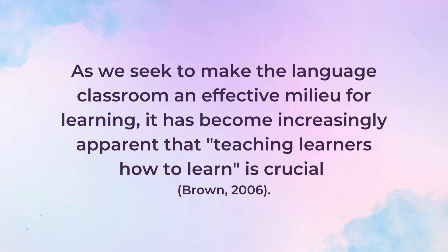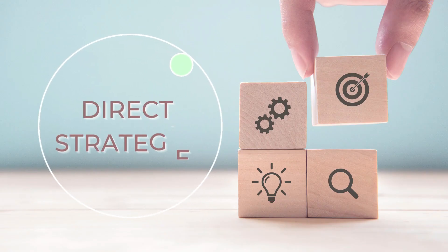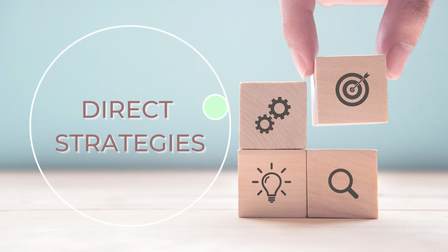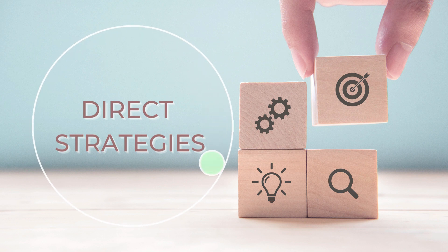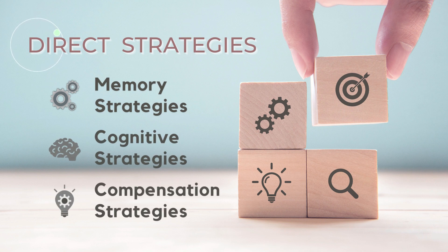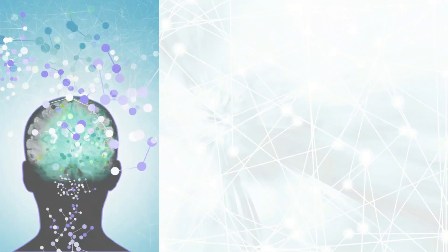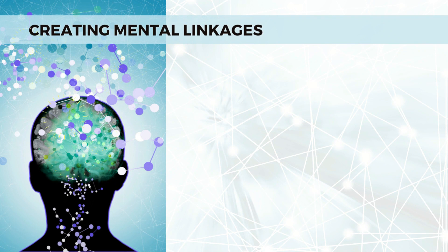That is according to Brown in 2006. The first group of strategies is called direct strategies. Under the direct strategies, we have memory, cognitive, and compensation strategies. Let us tackle the memory strategies first. The first strategy is creating mental linkages. There are three ways of achieving that: first is grouping,